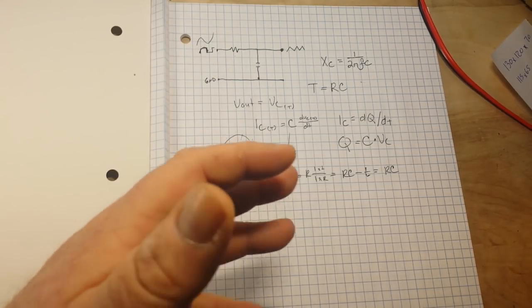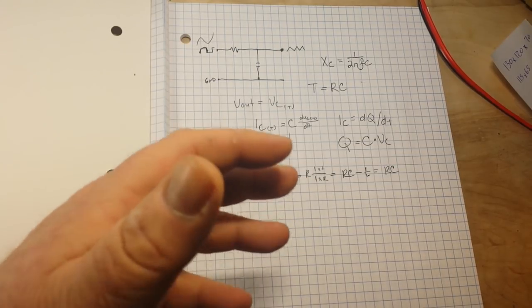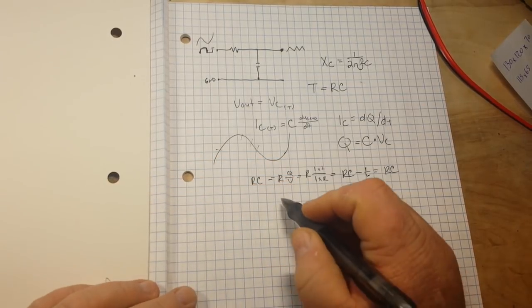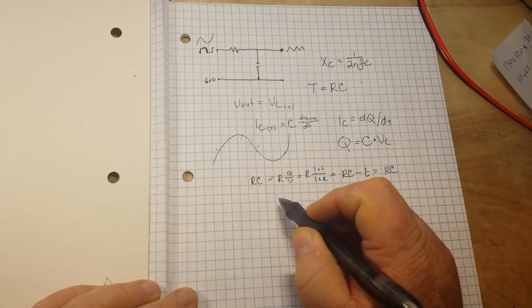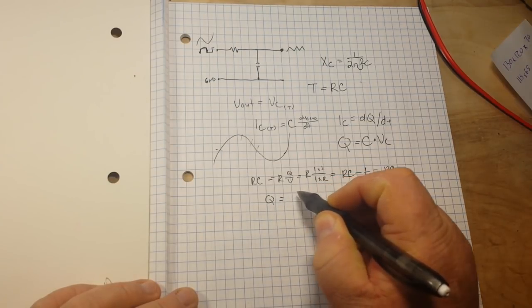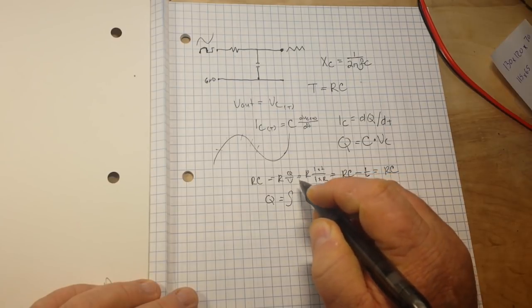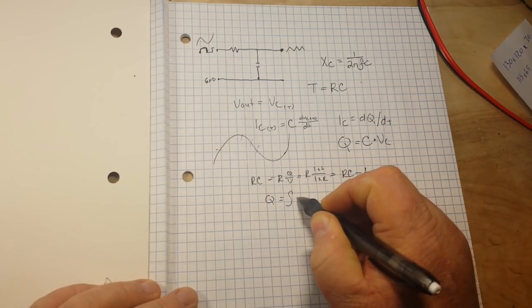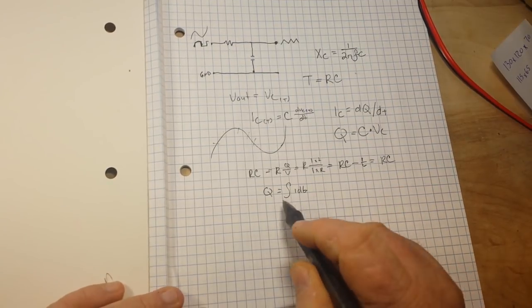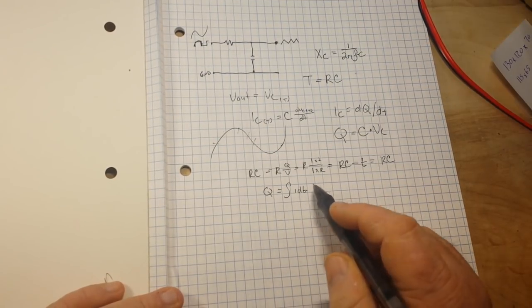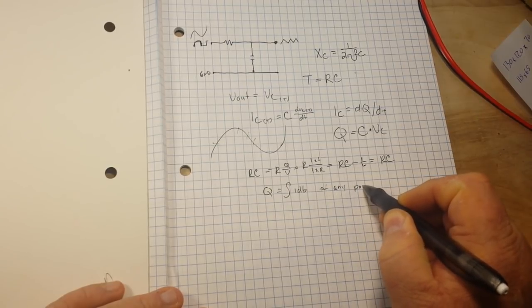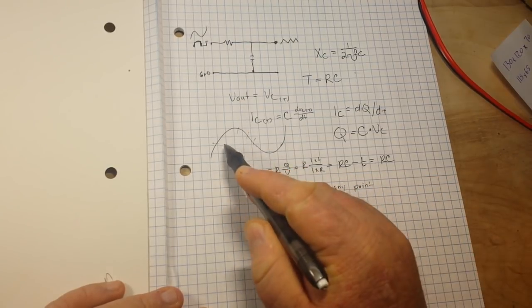Now the current, i is also dq over dt. So we get this relationship, q, our charge, is equal to this integral of i dt. See how it works? That is a charge at any point along our curve.